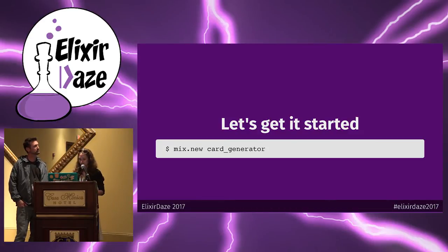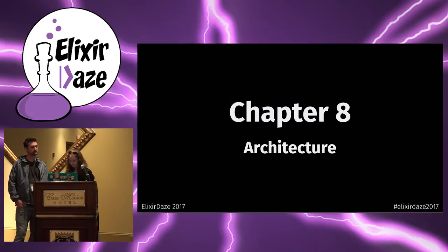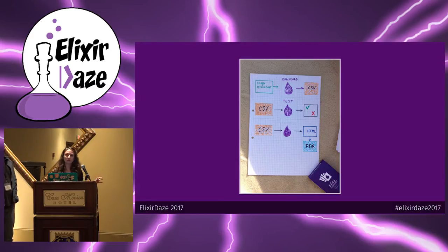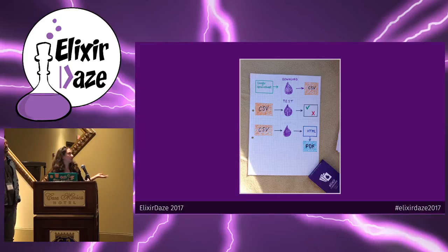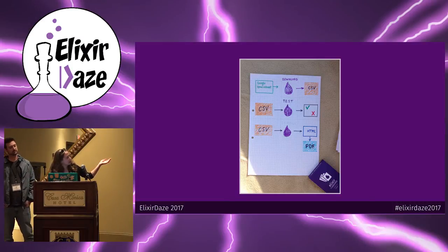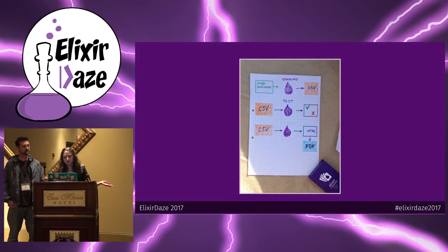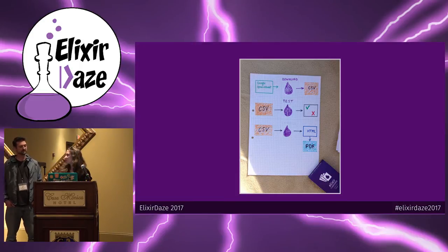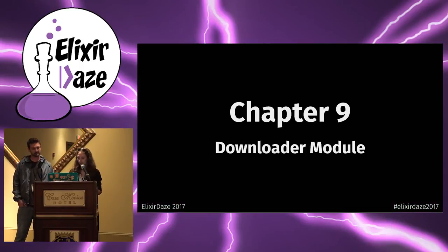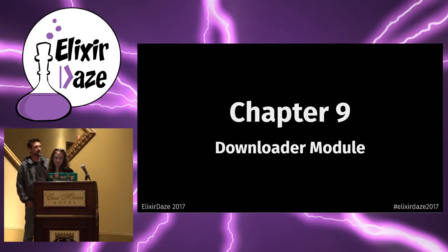Let's get started. Knowing those are the steps, we need to download - all of the data lives in Google Spreadsheet. The first step is to download it. Another is to test. And another is to convert, or compile - you see that it's in pencil because we keep changing the name. We still don't know what the best name for it is.